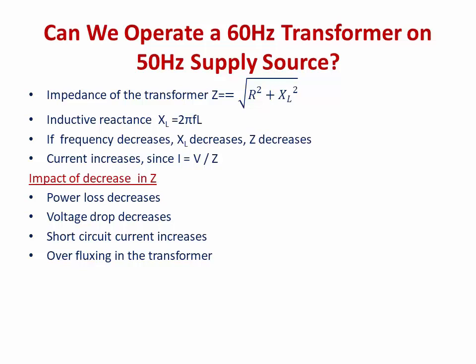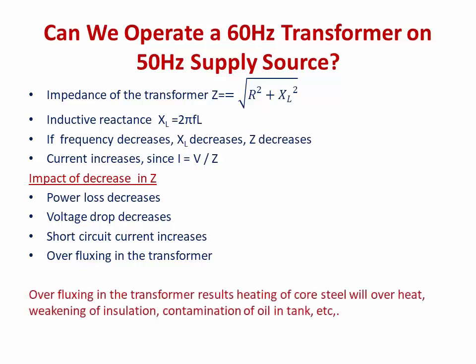What happens when over-fluxing occurs in a transformer? When there is over-fluxing, it creates heating of the core steel, weakening of insulation, contamination of oil in the transformer tank, and several other harmful effects. Hence, a 60 Hz transformer is generally not operated on a 50 Hz supply source.